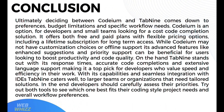In conclusion, deciding between Codium and Tab9 comes down to preferences, budget limitations, and specific workflow needs. Codium is an option for developers and small teams looking for a cost-effective code completion solution — it offers both free and paid plans with flexible pricing options, including a lifetime subscription for long-term access. While Codium may have fewer customization choices or offline support, its advanced features like enhanced suggestions and priority support can be beneficial for users looking to boost productivity and code quality. On the other hand, Tab9 stands out with its fast response times, accurate code completions, and extensive language support, making it a top pick for developers who value speed and efficiency. With its capabilities and seamless integration with IDEs, Tab9 caters well to larger teams or organizations that need a tailored solution. In the end, developers should carefully assess their priorities and try out both tools to see which one best fits their coding style, project needs, and overall workflow preferences.